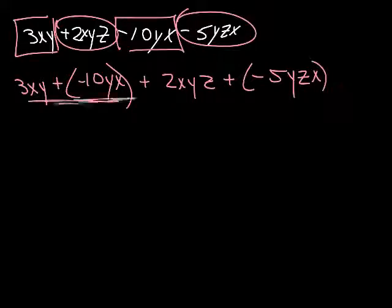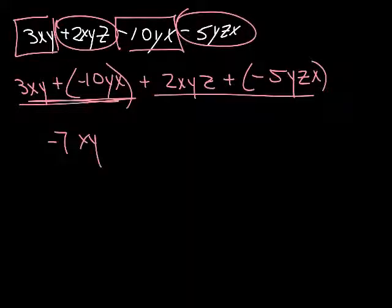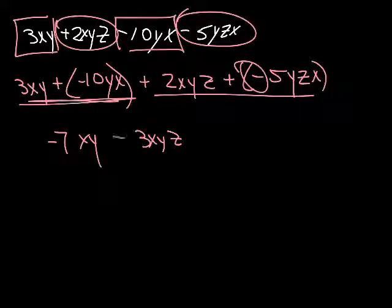Let's combine these. Signs are different — take the difference between the two and put the sign of the largest one on there. Then look at the other pair — signs are different again, so take the difference between the two and put the sign of the largest on there. Once I do that, I'm done.